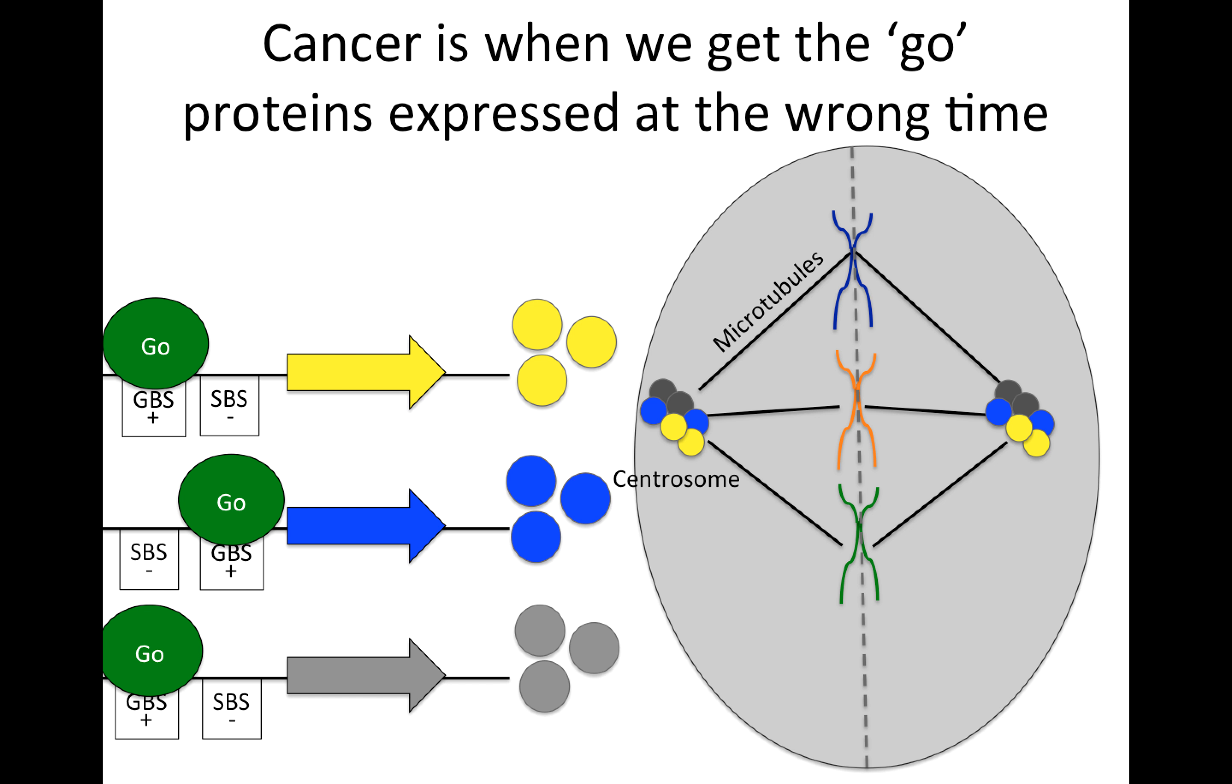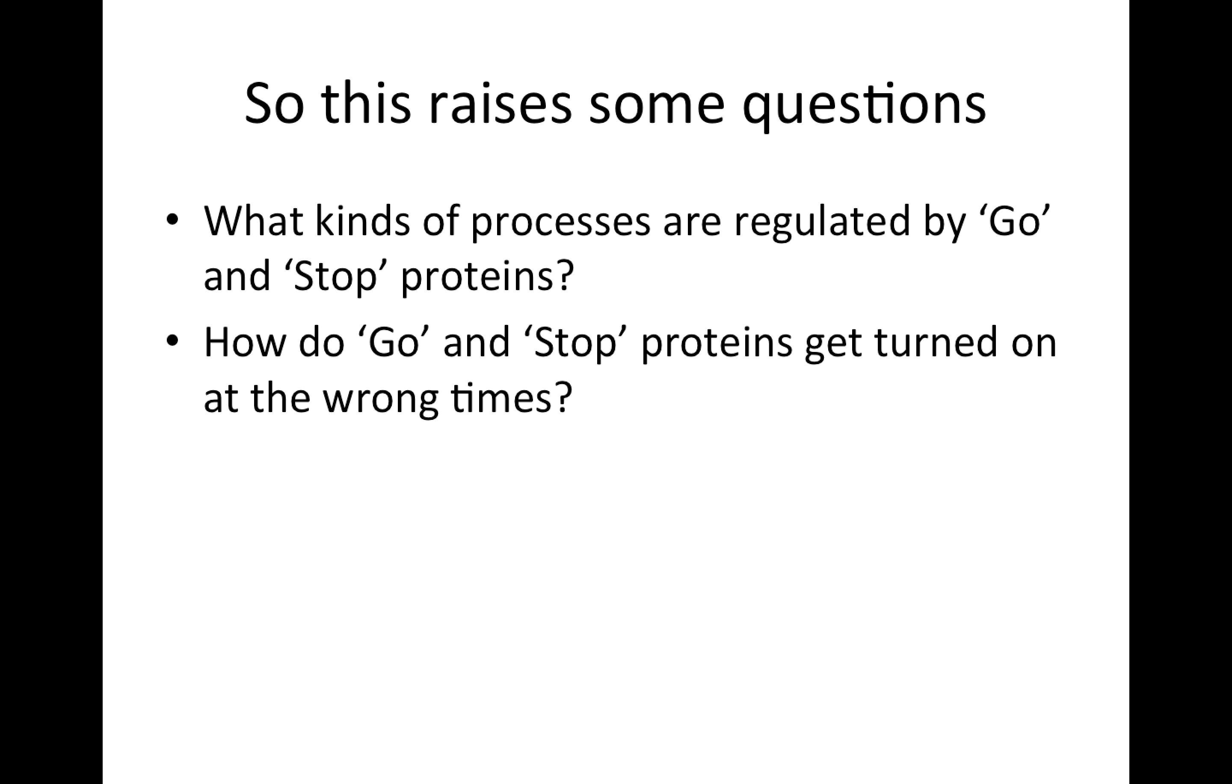And so then we can think of cancer as what we get when the go proteins are expressed at the wrong time, when we have cells whose growth is supposed to be regulated, but instead they're undergoing rapid division. So this raises some questions. What kinds of processes are actually being regulated by go and stop proteins? We talked about the centrosome here, but there are a bunch more. And how do we go from having a healthy cell to one in which the go and stop proteins are turned on at the wrong times?